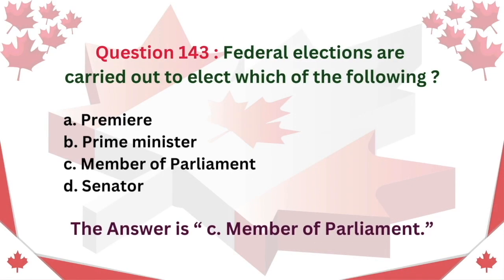Question 143: Federal elections are carried out to elect which of the following? A. Premier. B. Prime Minister. C. Member of Parliament. D. Senator. The answer is C. Member of Parliament.